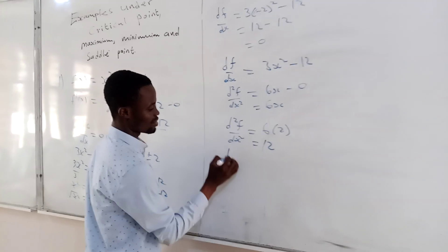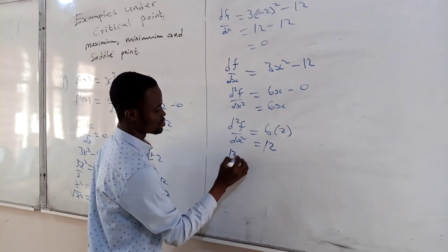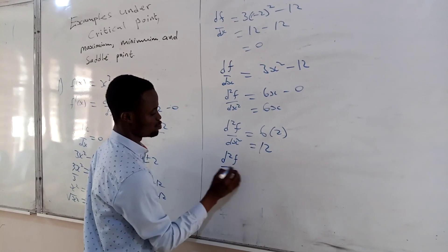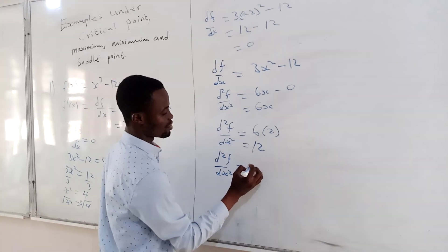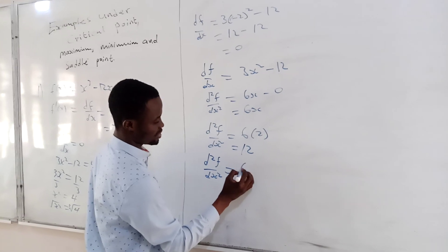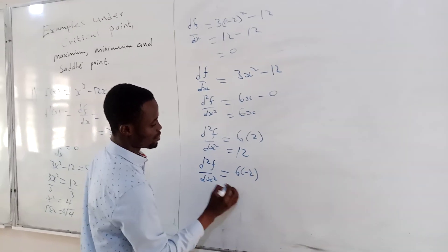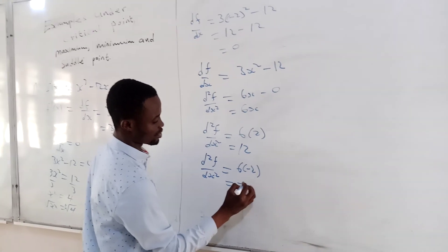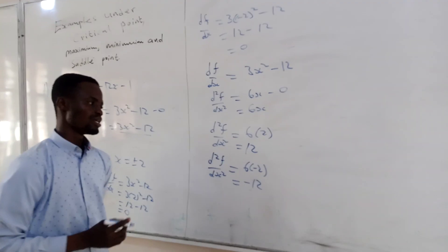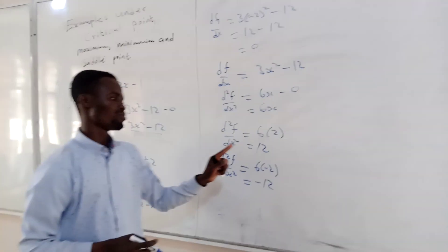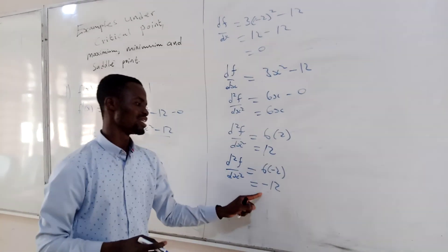Now let's put in x equal to negative 2. When x equals negative 2, you get 6 times negative 2, which equals negative 12. So we have positive 12 and negative 12 as our two results.